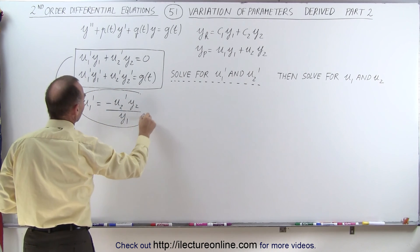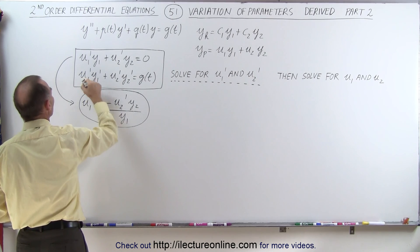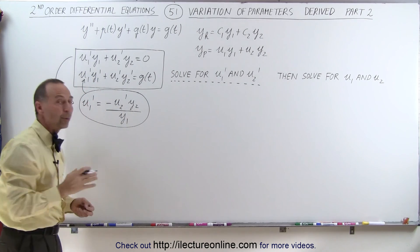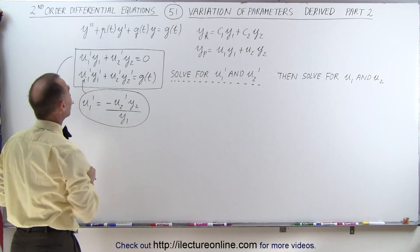So go ahead and circle that, and we're going to take this result and plug that back into the second equation to eliminate u1' and then come up with an equation that only has u2' in it.